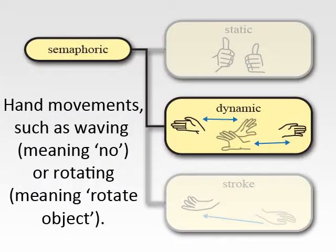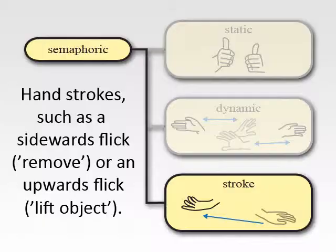Semaphoric dynamic gestures involve hand motions, for example, rotating hands or waving. Semaphoric strokes are rapid movements in a specific direction, for example to mean stop, drop, or remove.